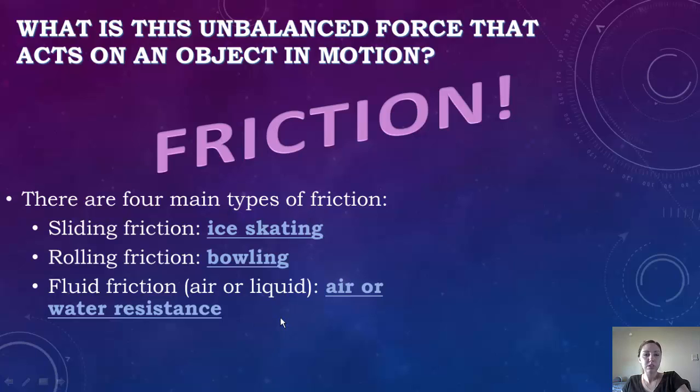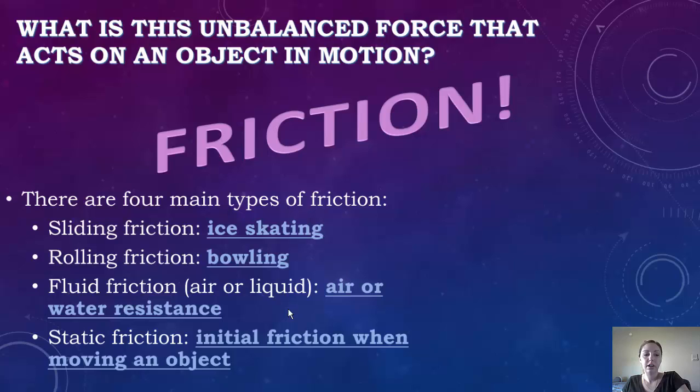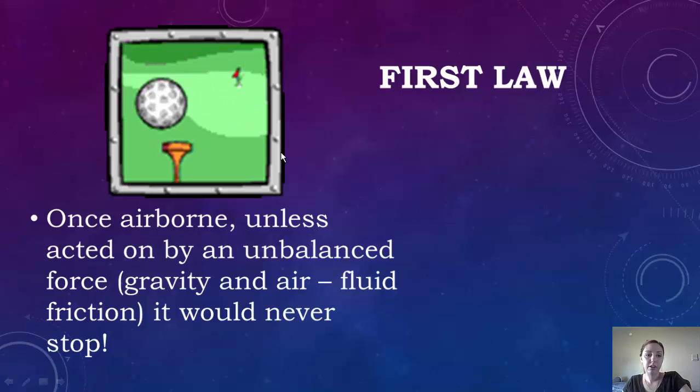You have fluid friction, which can be either air or liquid. It's basically when air or water is resistant. And then you have static friction, which is the initial friction when an object is moving. So when you're rolling your hands together to keep warm, between your hands there's going to be friction. So there's many types of friction.